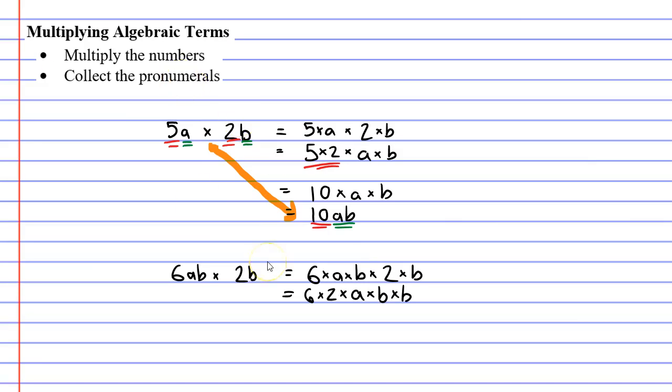So first of all we'll multiply our numbers. 6 times 2 is 12, and then we'll group together our pronumerals. Now we have 1a but we also have 2b. So what do we do in that situation? We use our powers. We write b squared.